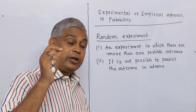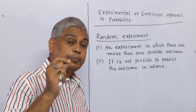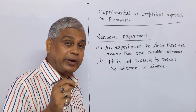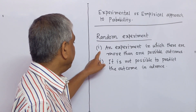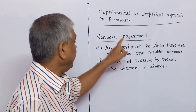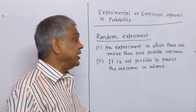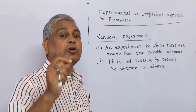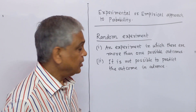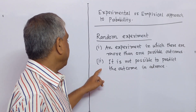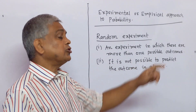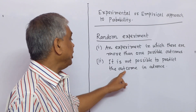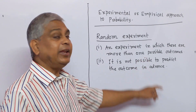Therefore, a random experiment is an experiment in which: number 1, there are more than one possible outcomes, and number 2, it is not possible to predict the outcome in advance.